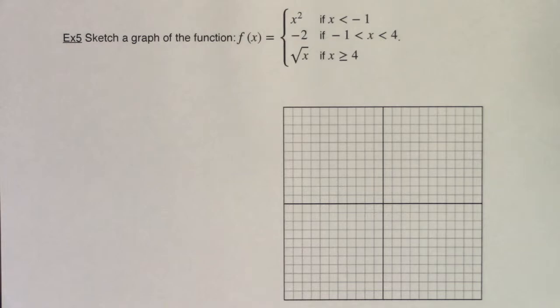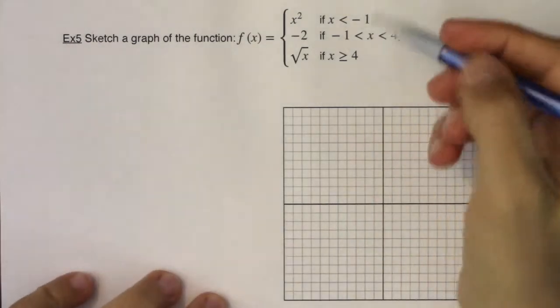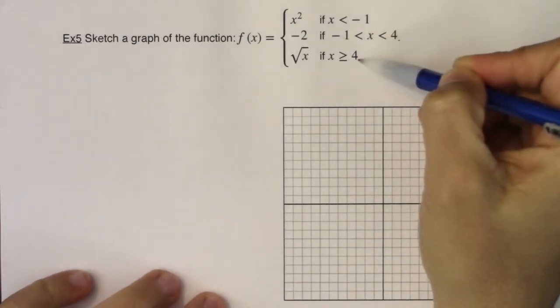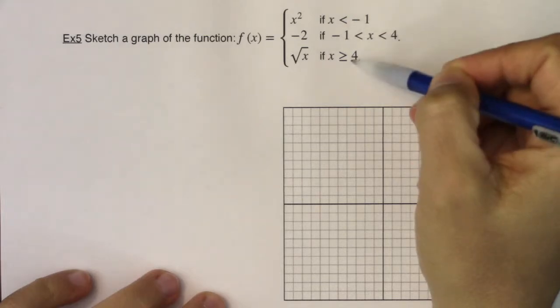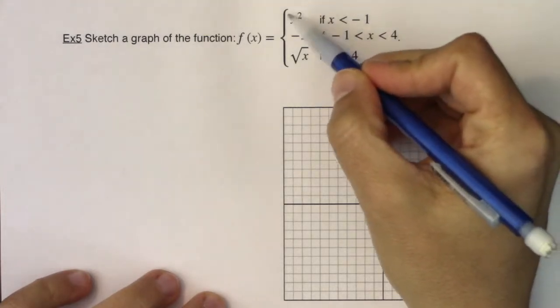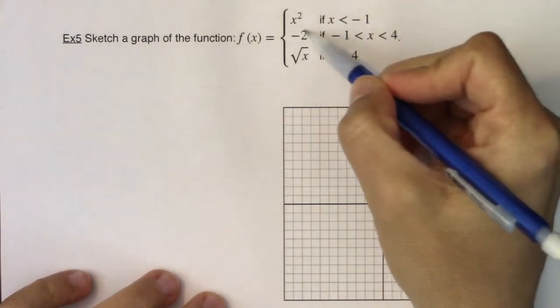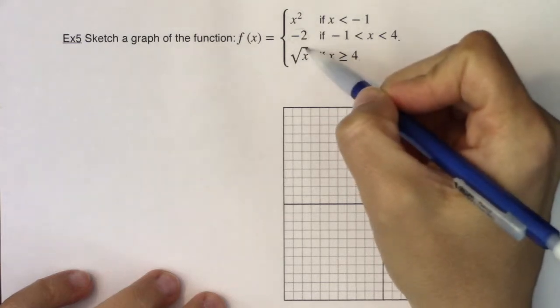Hey Math 31, let's take a look at example five. This time I have three pieces, and I've got to graph this function. So I have a parabola, I have a constant function, and I have a square root function.